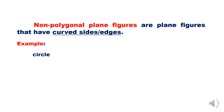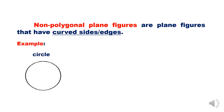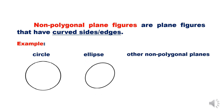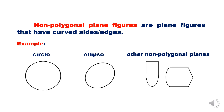Non-polygonal plane figures are plane figures that have curved sides or edges. Examples include the circle, ellipse, and other non-polygonal planes.